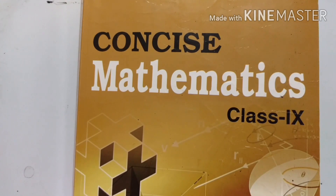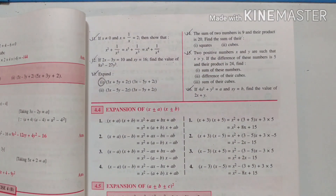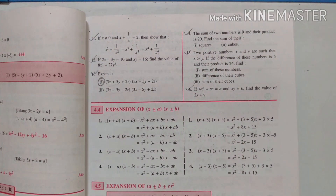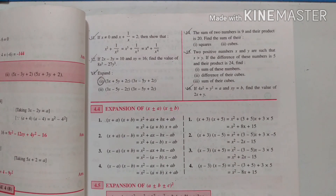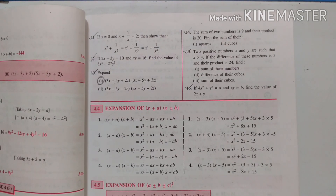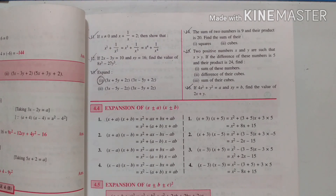Let us continue with exercise 4b, 15th problem. Two positive numbers x and y are such that x is greater than y. If the difference of these numbers is 5 and their product is 24, find the sum of these numbers, the difference of their cubes, and the sum of their cubes.